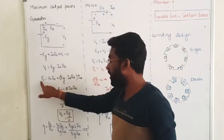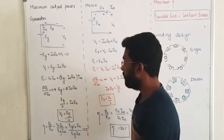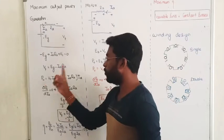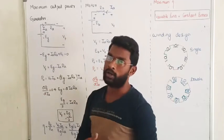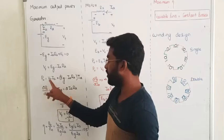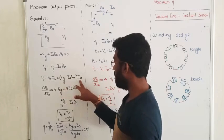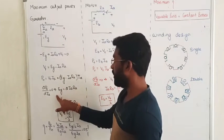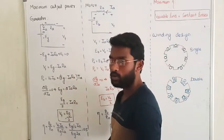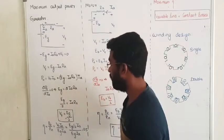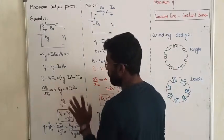Now I am going to differentiate this power with respect to armature current to find the maximum value. The condition for maximum is: first derivative equals zero. Differentiating the expression Eg*Ia minus Ia²*Ra with respect to Ia gives Eg minus 2*Ia*Ra equals zero. From this I can say Eg equals 2*Ia*Ra, or Ia*Ra equals Eg divided by 2.